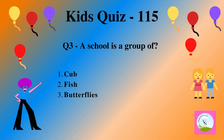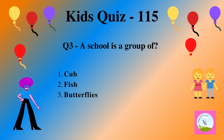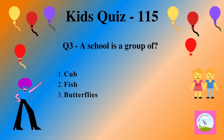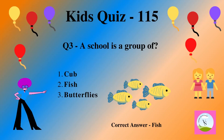Question 3. A school is a group of: 1. cub, 2. fish, 3. butterflies. And the correct answer is fish.